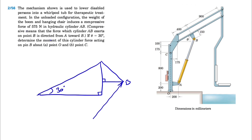Welcome back. We're going to be solving question 56 from Chapter 2 of the Maheim textbook. We have this mechanism that is used to lower a disabled person into a ripple top for therapeutic treatment. In the unloaded configuration, the weight of the boom and hanging chair induces a compressive force of 575 Newton in hydraulic cylinder AB — so the cylinder is in compression.